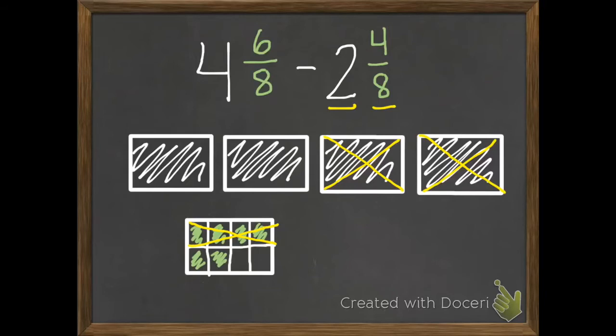So what does this leave us with? What is the difference? What is our answer? So how many holes do we have left? 1, 2. So 2 holes.